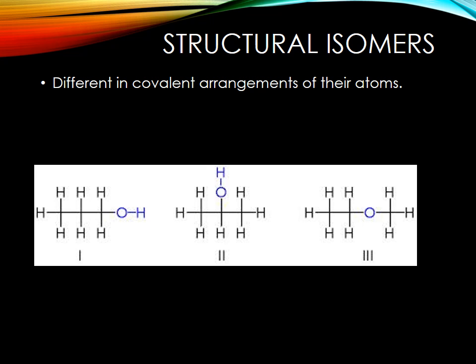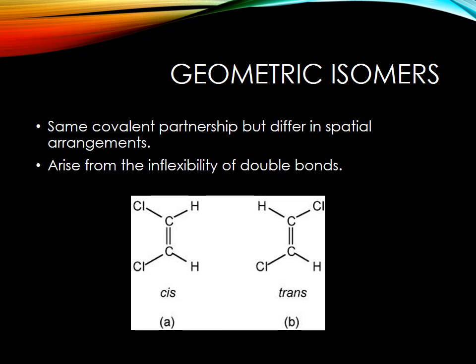Looking at the first type, structural isomers have a completely different covalent arrangement. But if you count, remembering that carbons are just not shown, you can see they have the same amount of carbons, hydrogens, and oxygens — just arranged in a different configuration. Geometric isomers have the same partnerships, but their spatial arrangement is different. A cis isomer is where that functional group will be on the same side, and a trans isomer is where the functional groups are moved to opposite sides. This happens typically because of a double bond.